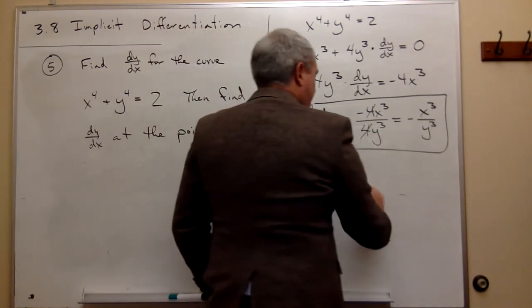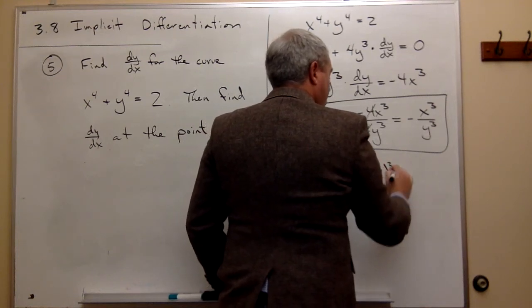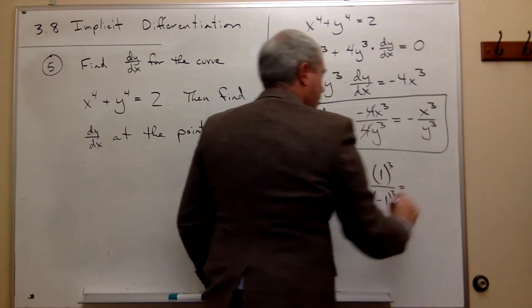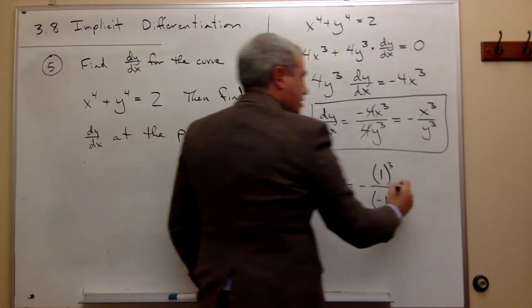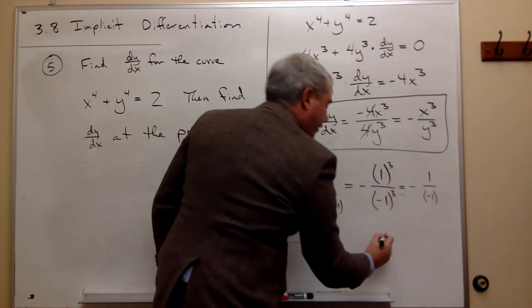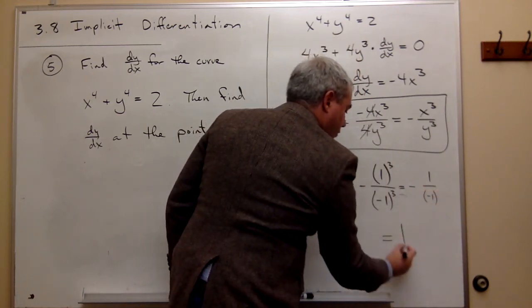So I get minus one cubed over negative one cubed. In other words, this is negative one over minus one. Or if you prefer, just one.